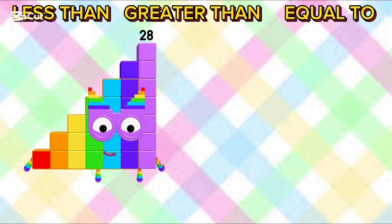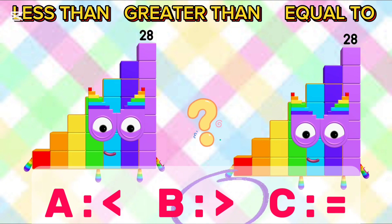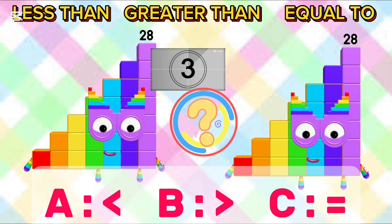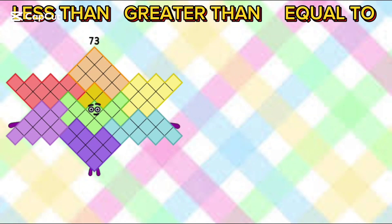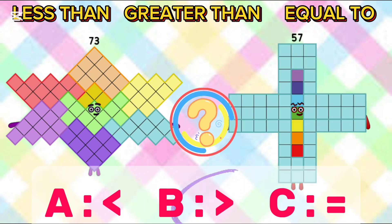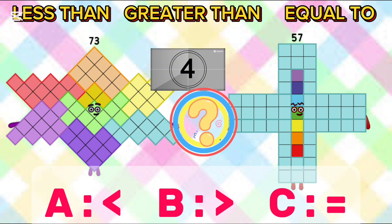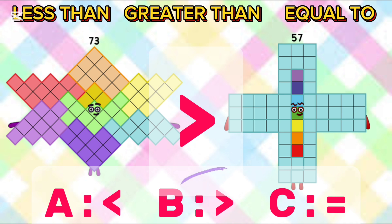28 and 73 vs 57. What will come? A: less than, B: greater than, C: equal to. The answer is B, greater than. 73 is greater than 57.